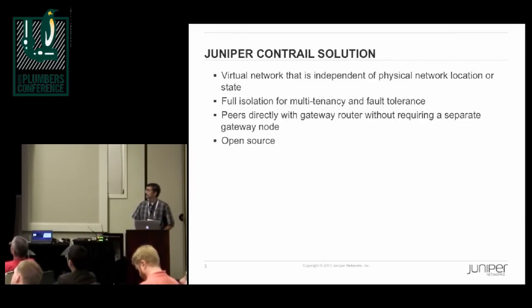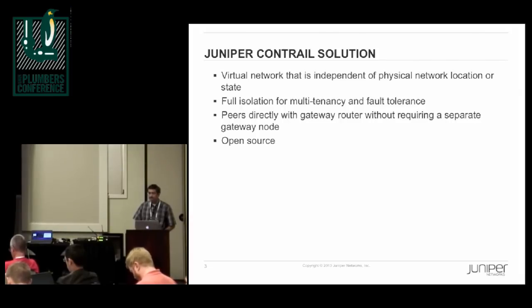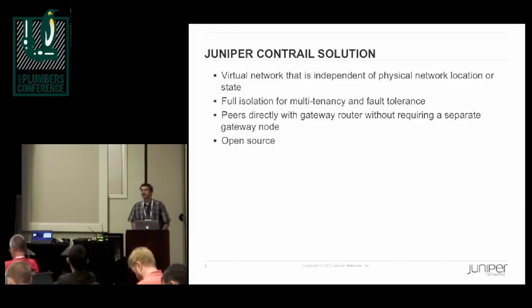The Contrail solution is a network virtualization solution. It allows you to create virtual networks that are independent of the physical network. You can provision new applications or migrate existing applications without touching the physical network infrastructure or reworking security policies and load balancing. Changes in the physical network do not affect the virtual networks, there is full isolation of tenants, addresses are unique or private per tenant, and failures in the virtual domain do not propagate into the physical domain. We are also able to peer directly with a gateway router in a cloud data center, so we do not need a separate gateway node to bridge between the virtual and physical worlds.